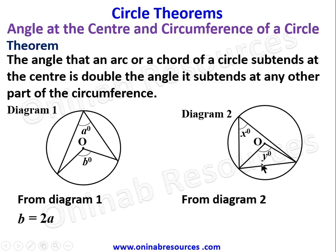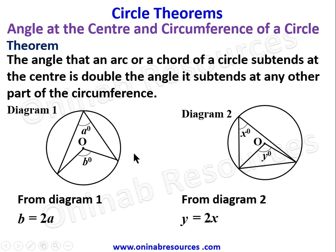From diagram two, there is a chord. This chord subtends angle y degrees at the center. The lines accommodating x degrees both originate from the two ends of the chord, so x degrees is the angle at the circumference corresponding to y degrees at the center. By this theorem, y equals 2x. That is the diagrammatical explanation of this theorem on circle geometry.